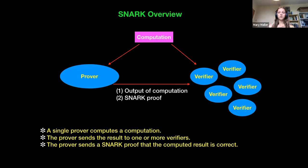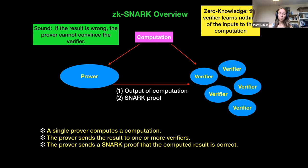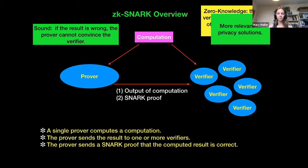How a SNARK does this: it takes in a computation and provides a proof that the output of that computation is correct. We have two security properties — the most important one is soundness. If the result is wrong, then no prover can convince an honest verifier otherwise. You can also have a zero knowledge component, which is useful for privacy solutions. I'm going to start by talking a lot more about soundness, because that is relevant for both scaling and privacy solutions.